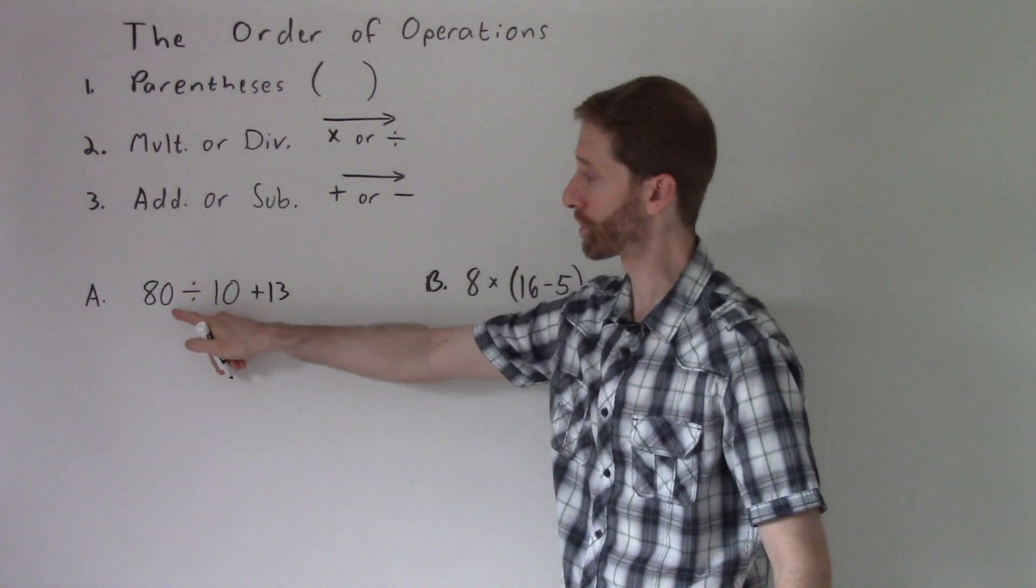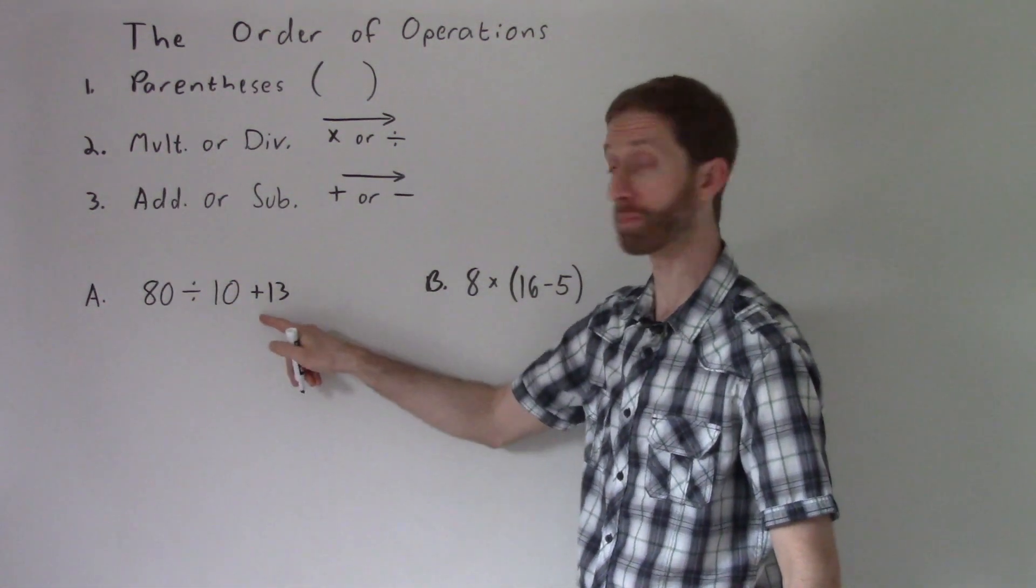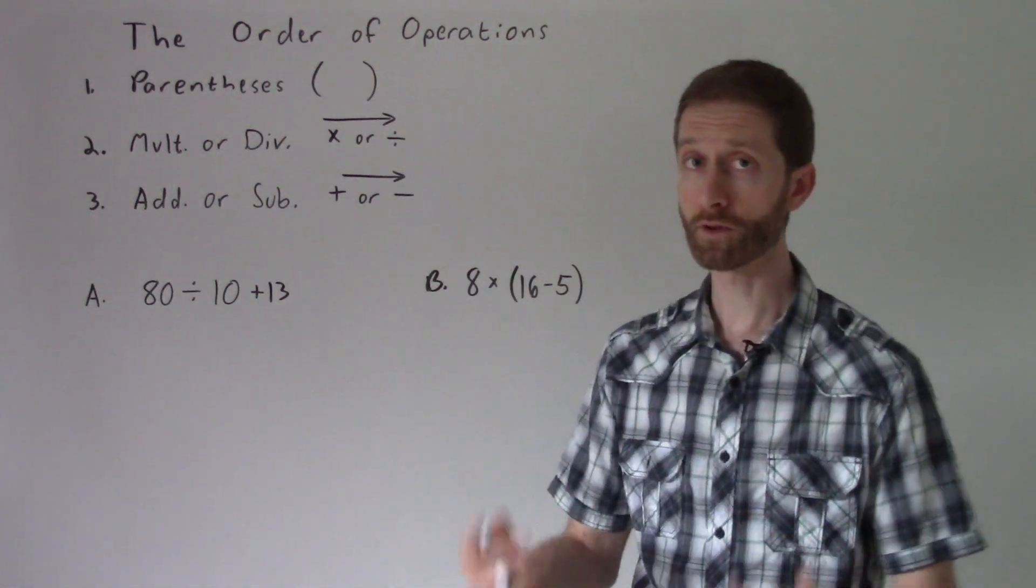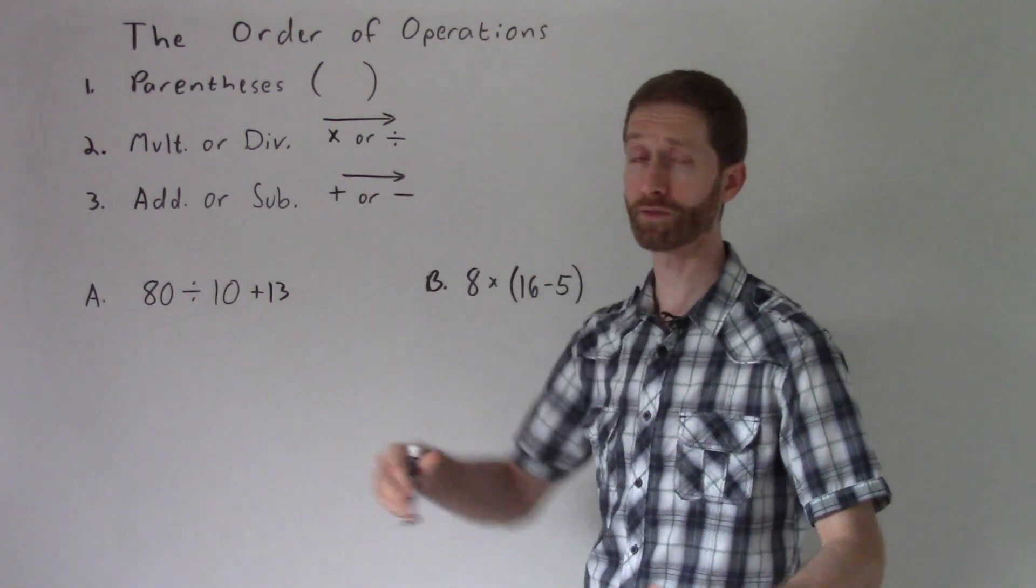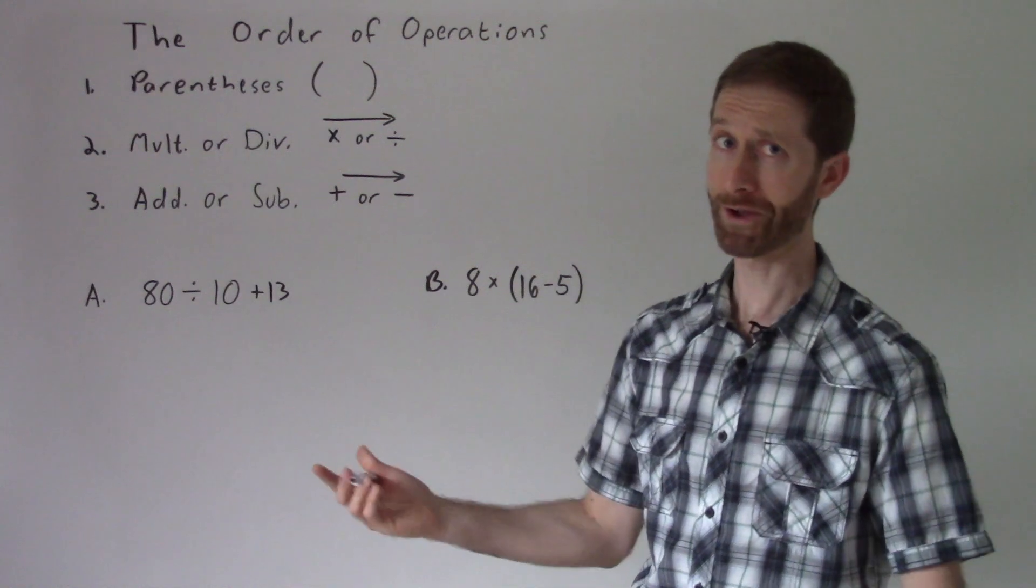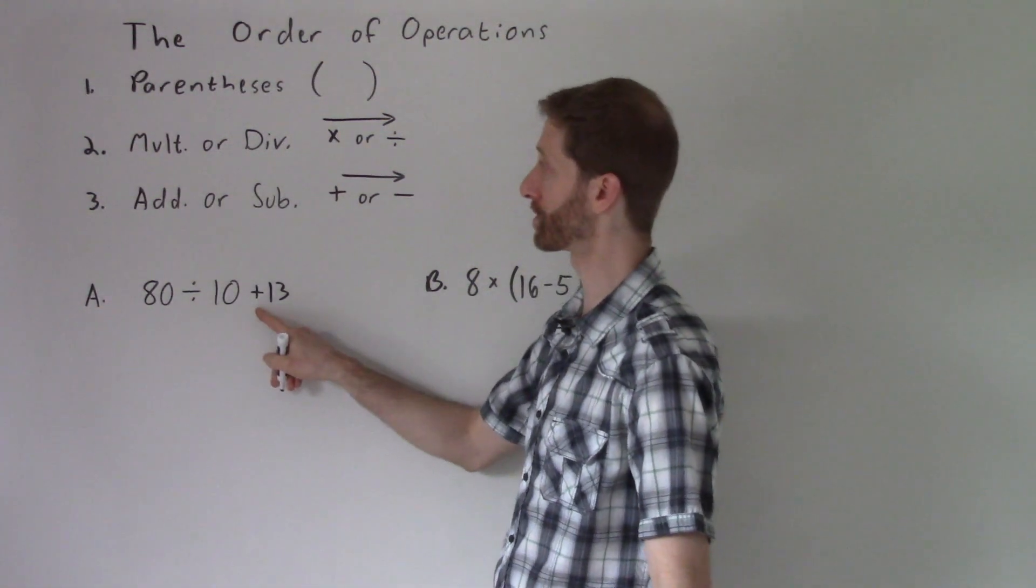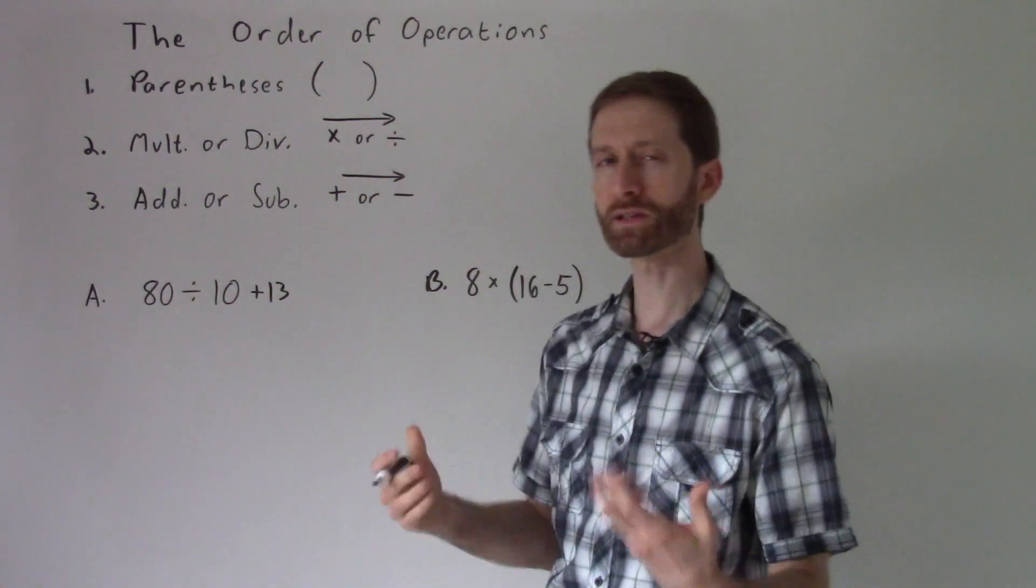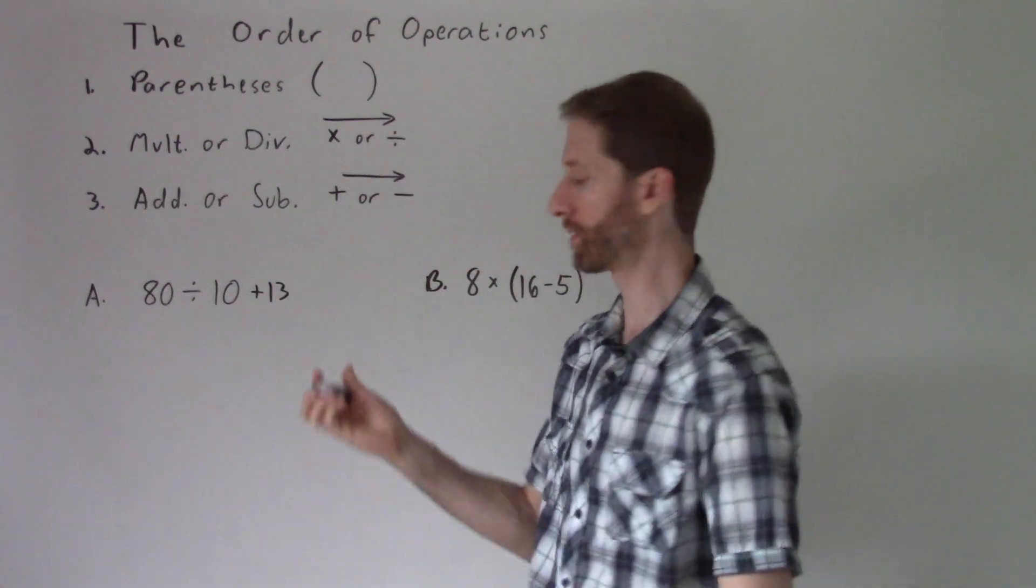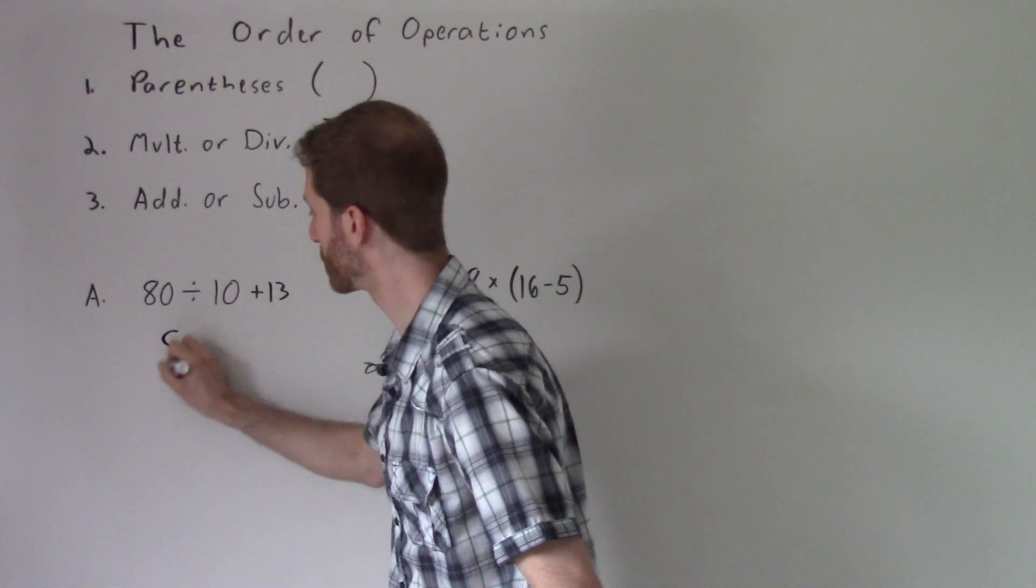So let's look at our first problem, 80 divided by 10 plus 13. The first step we're going to do using our order of operations is the division. So let's take a look at it. We've got 80 divided by 10 plus 13, division first, and I do 80 divided by 10. I'm basically looking at that as a standalone problem. 80 divided by 10 is 8.